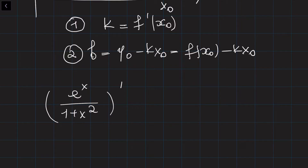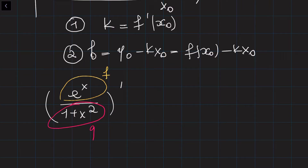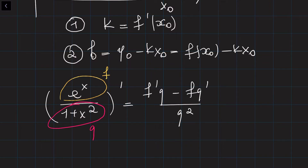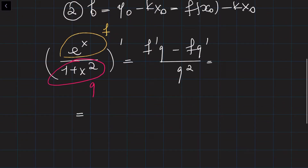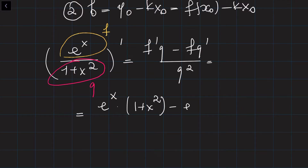To find the derivative of this curve we need to use the so-called quotient rule. We are going to denote the function in the numerator as f and the function in the denominator as g. The derivative of this function is simply equal to (f′g − fg′) divided by g squared. So the derivative of f is e^x, times g which is 1 plus x squared, minus e^x times the derivative of g(x).